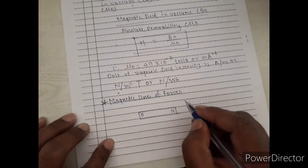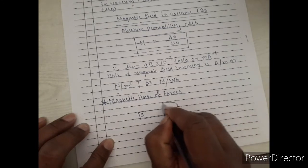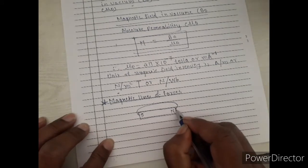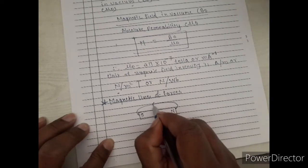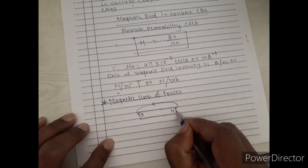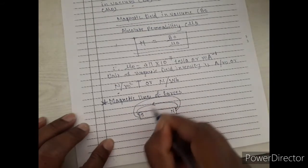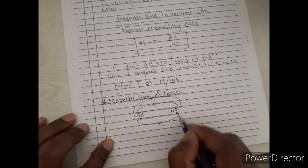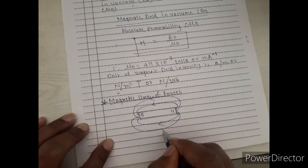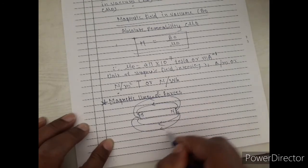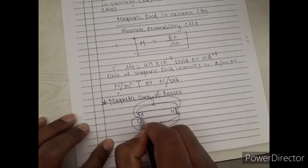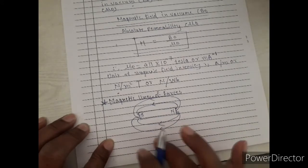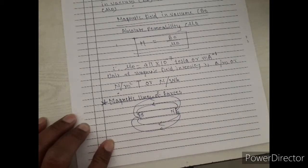North pole is always attracted toward the south pole. So lines of forces always start from the north pole and end at the south pole. They start from north pole and end at south pole. This is called the magnetic line of forces.